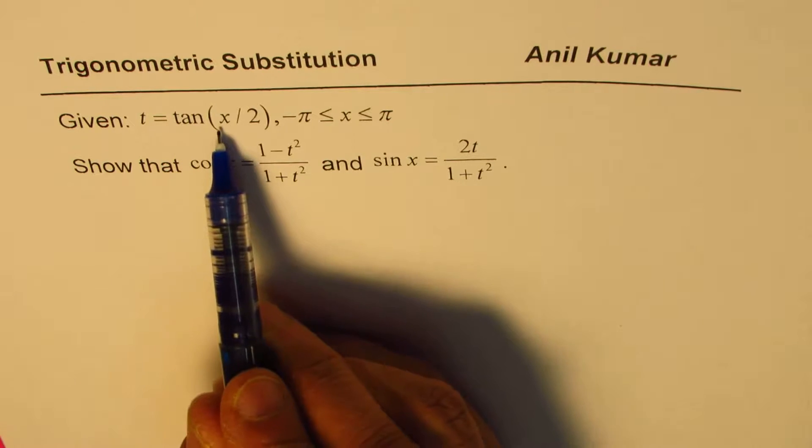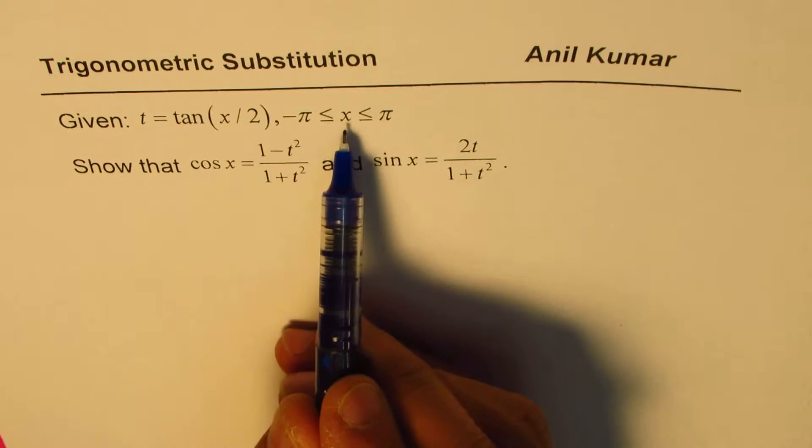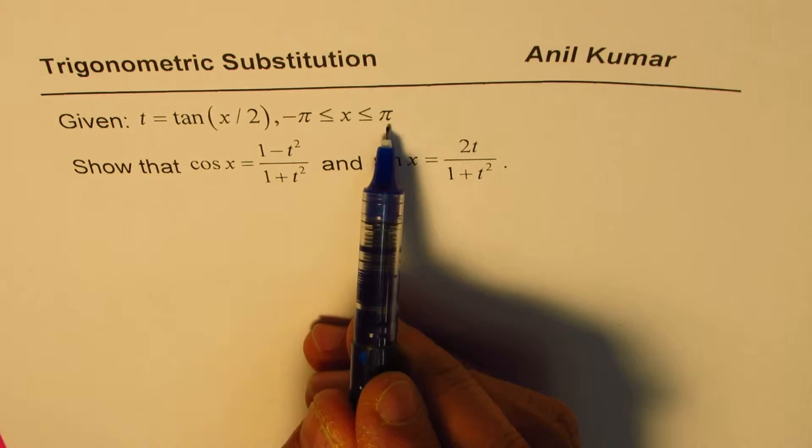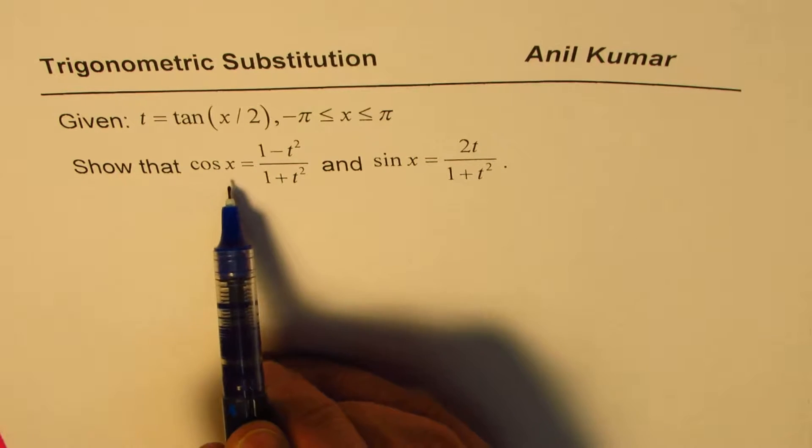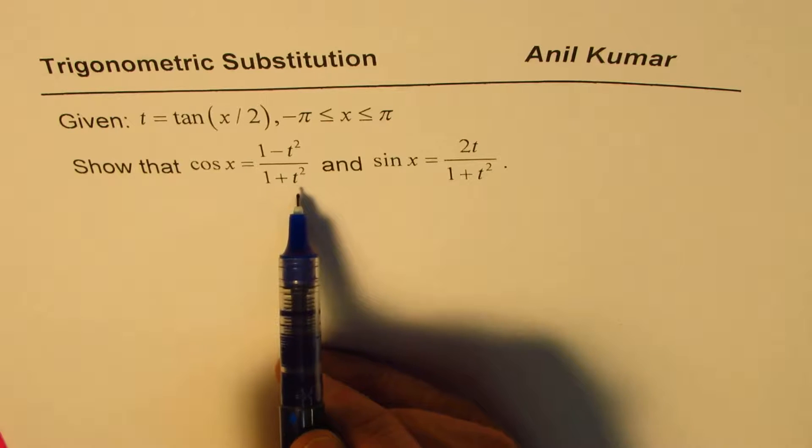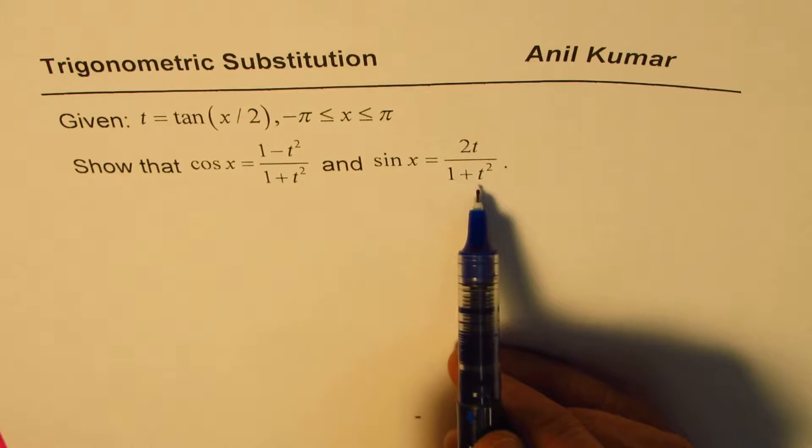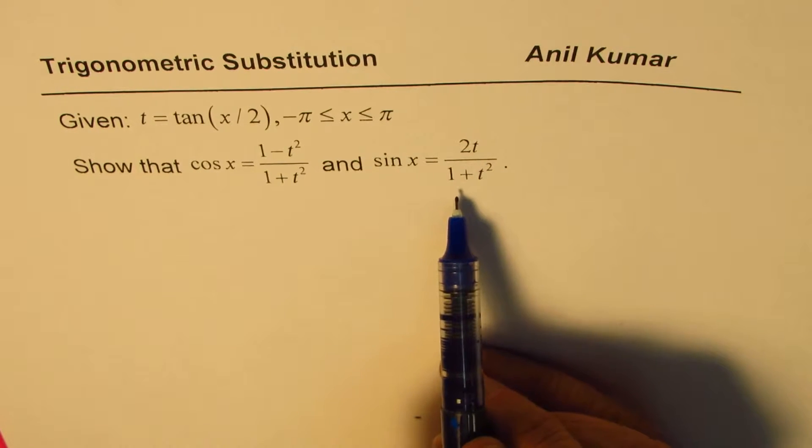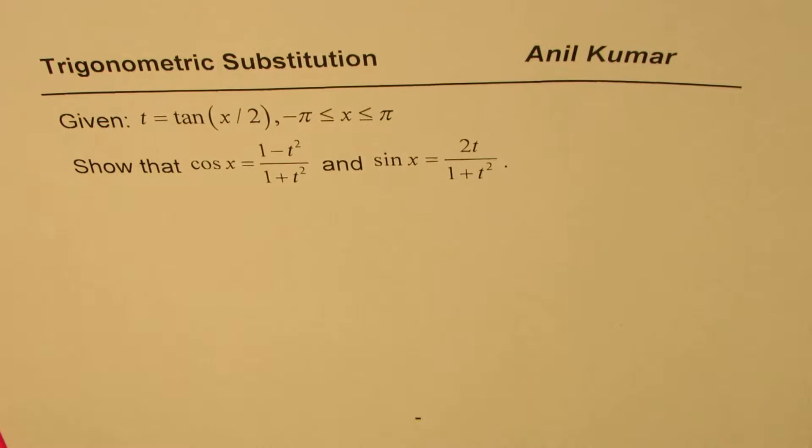If t equals tan(x/2) and x is between minus pi to plus pi, show that cos x equals (1 - t²)/(1 + t²) and sin x equals 2t/(1 + t²). That's the question for you.